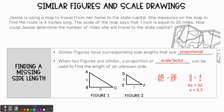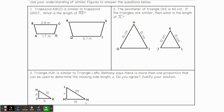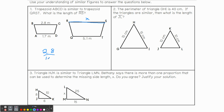Let's do a couple of examples. Number one: trapezoid ABCD is similar to trapezoid QRST. We're looking for side length RS — we'll call that x. Let's think about our corresponding sides. You can put x on top or bottom, but I always like to start from the top down. So I'm going to do 2.8 over 1.7.